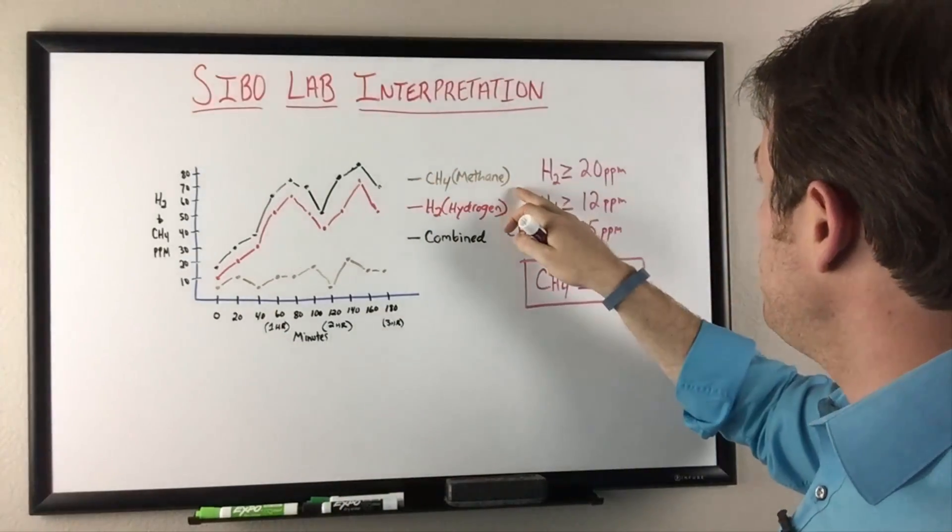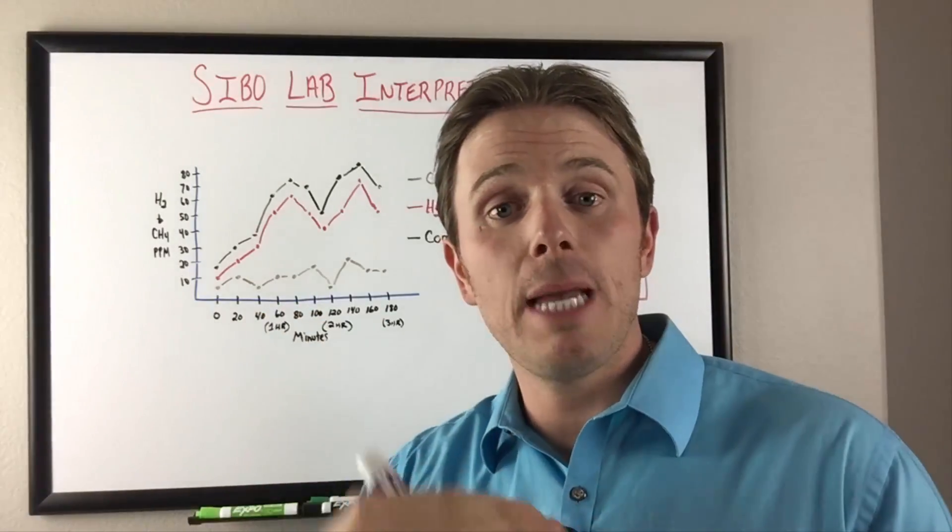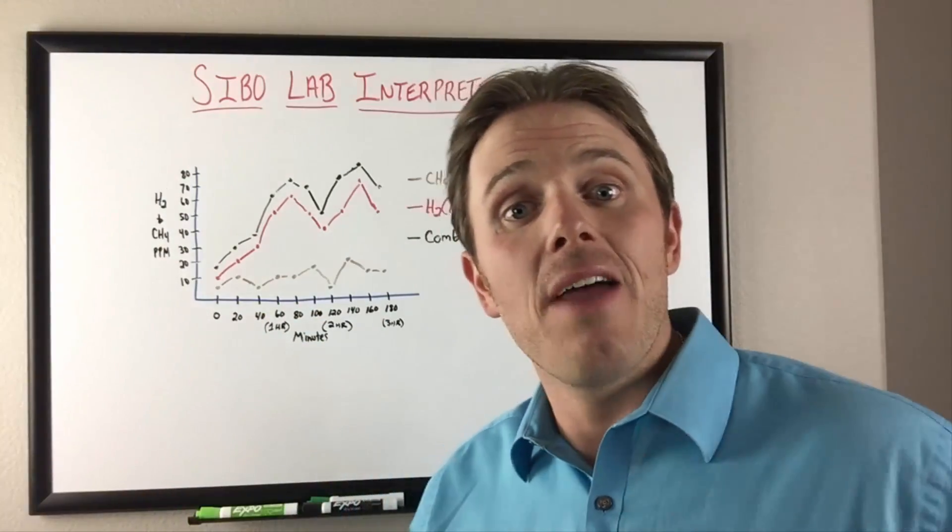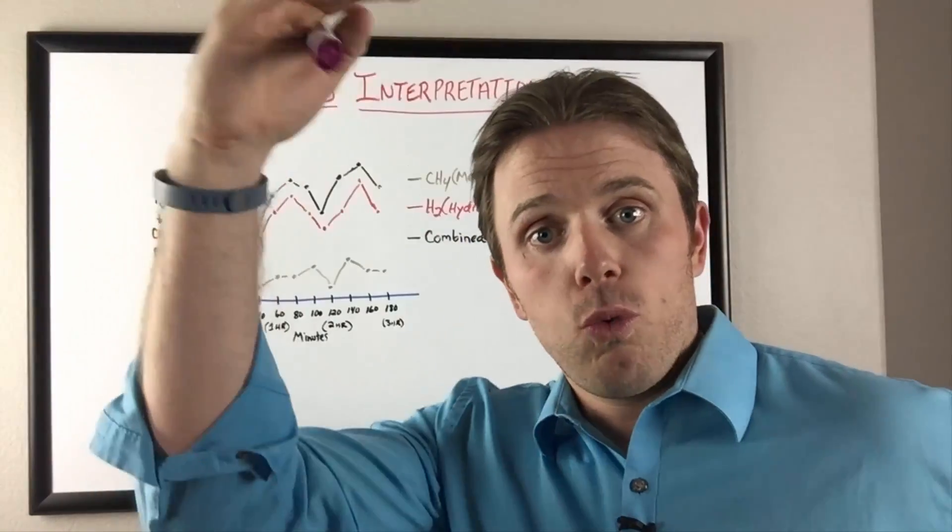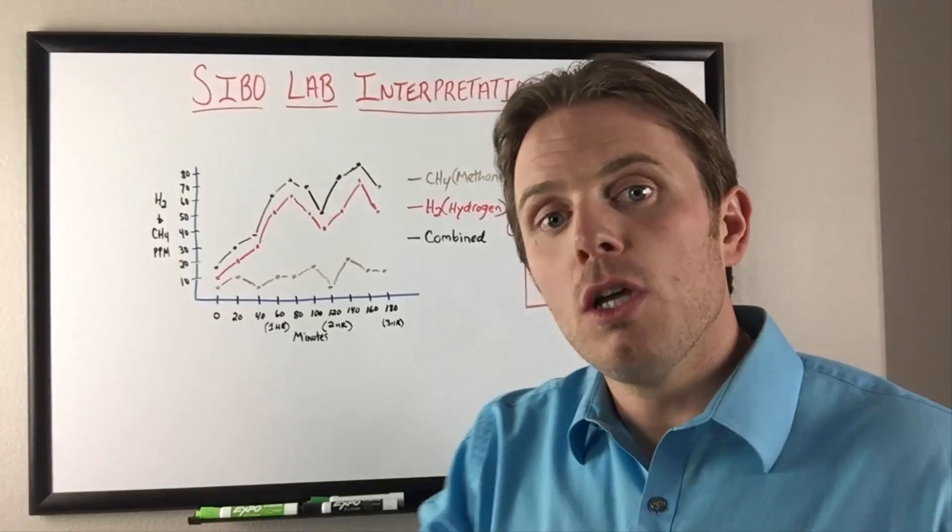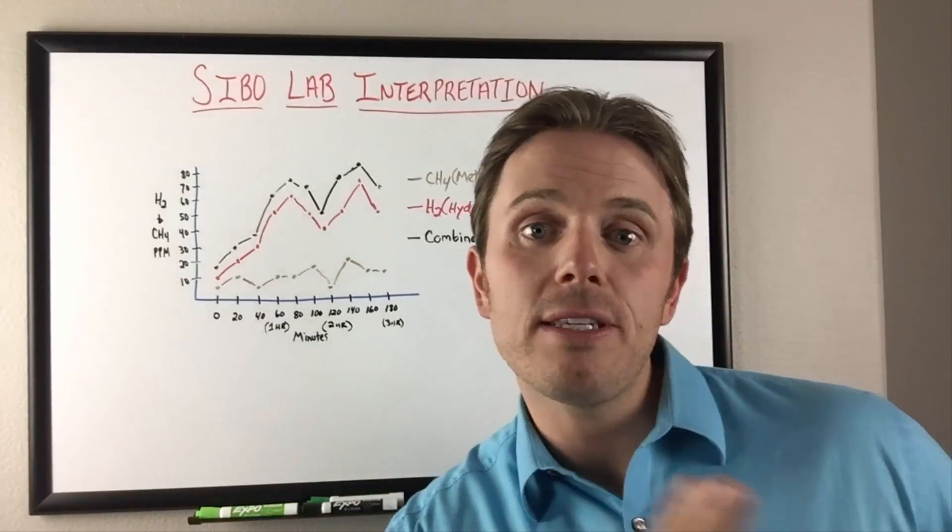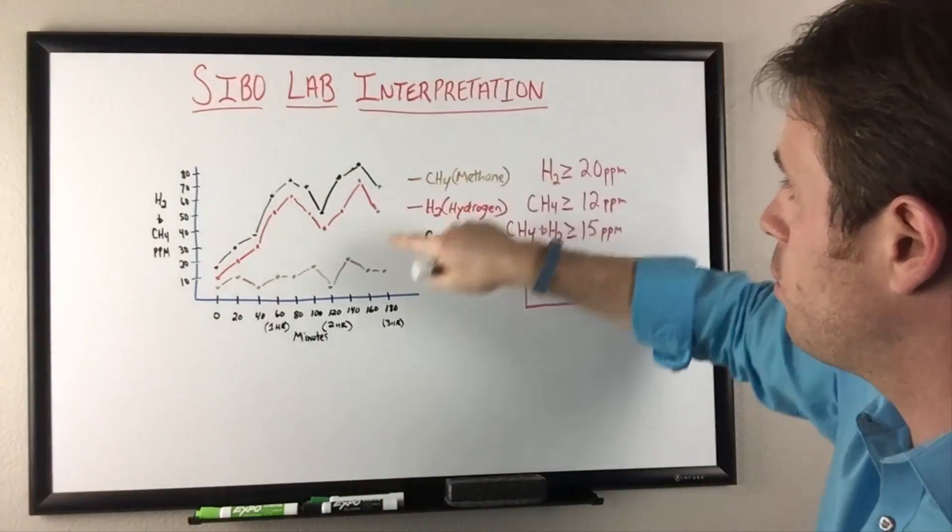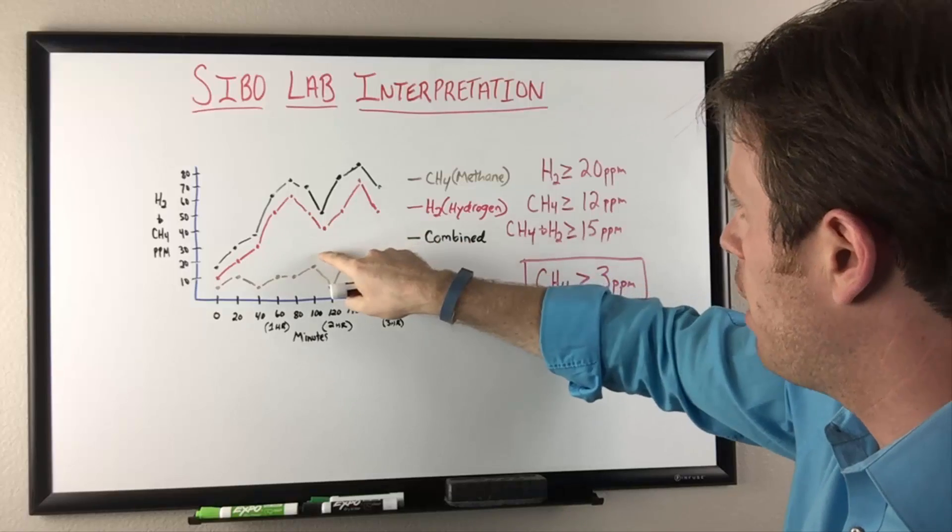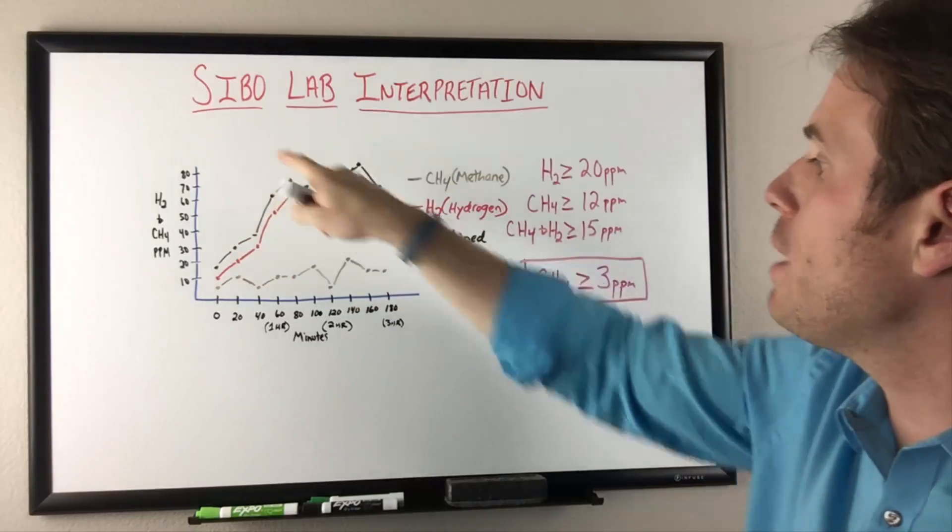For methane, we're looking at greater than 12, a jump from one sample to the next. And then a combo of hydrogen and methane greater than 15. So 20 for hydrogen, 12 for methane, and 15 for hydrogen and methane combined. We have it all charted out here. Here's your methane in brown, hydrogen in red, and combo in black.